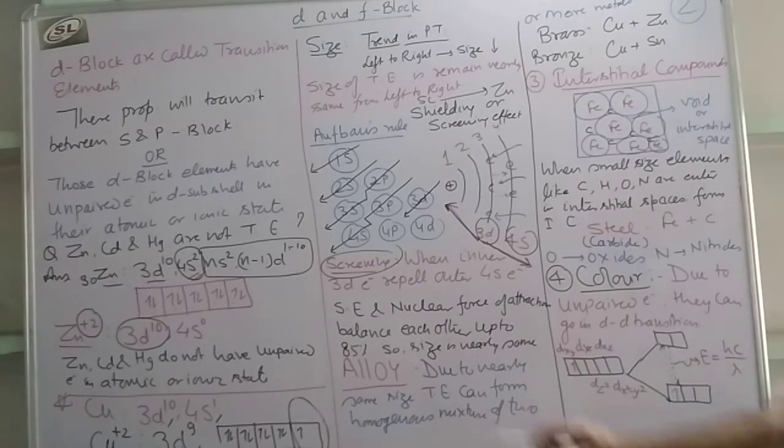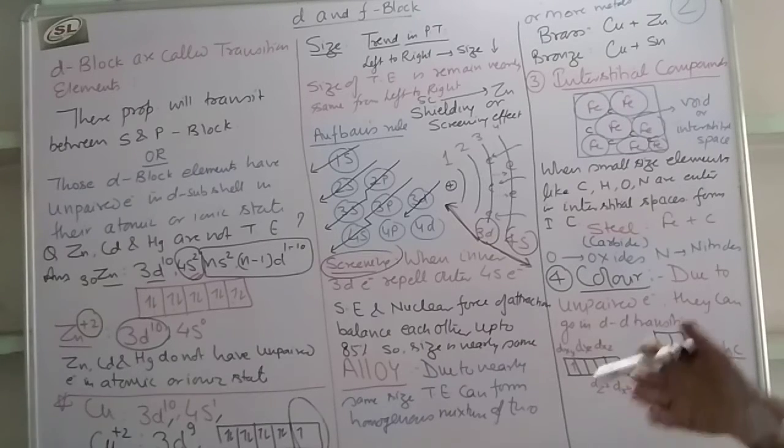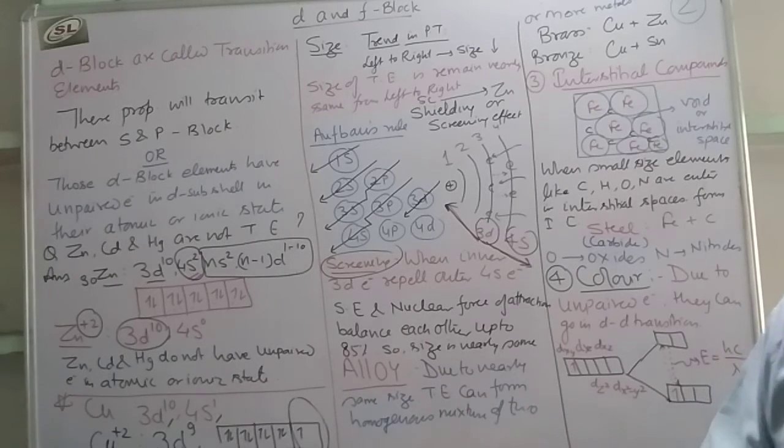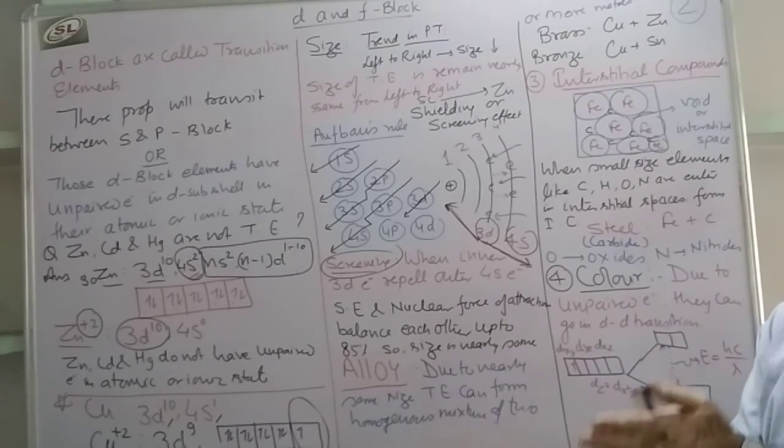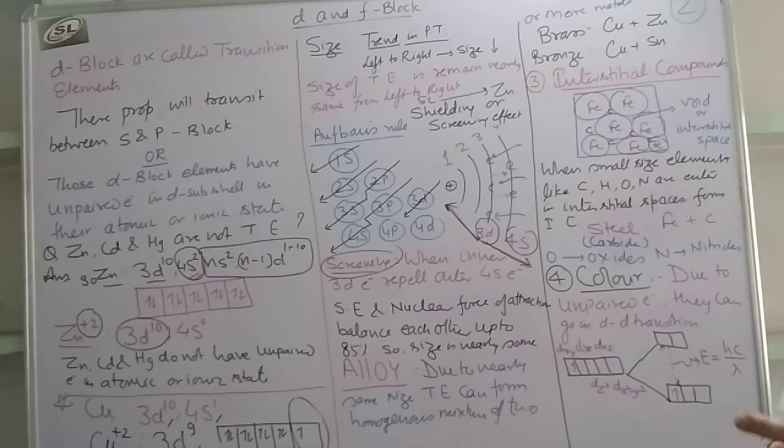Now we will talk about alloys. Alloys are the homogeneous mixture of two or more metals only - metal with metal, not non-metal. When they form alloys, due to the nearly same size, transition elements can form homogeneous mixture of two or more metals. Because of similar size, they can replace each other.